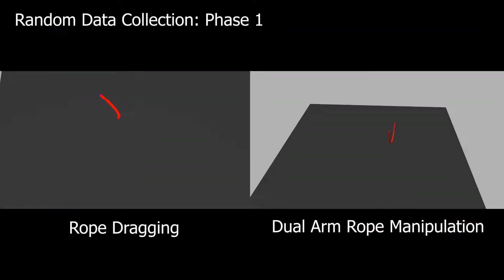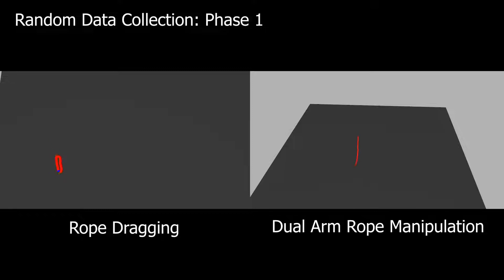First, we learn the unconstrained dynamics. This is done in an environment where the sources of physical constraints, such as obstacles or the robot's arms, are removed. This is because pulling the rope taut, or self-collision between the robot's arms, induce difficult dynamics that we want to avoid learning. We collect data with random actions and train a neural network using this dataset.